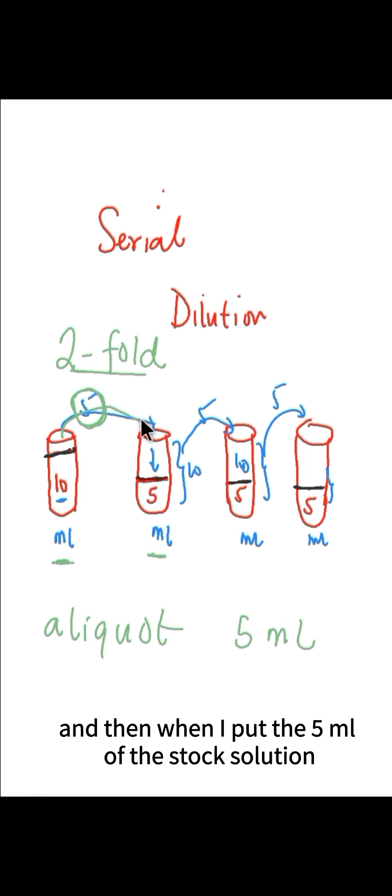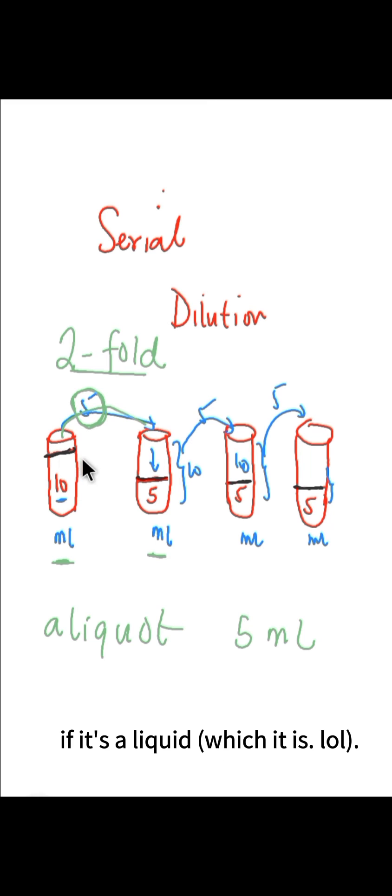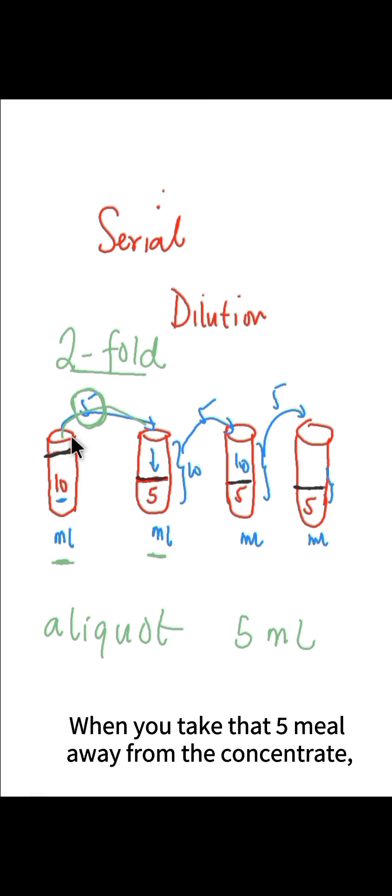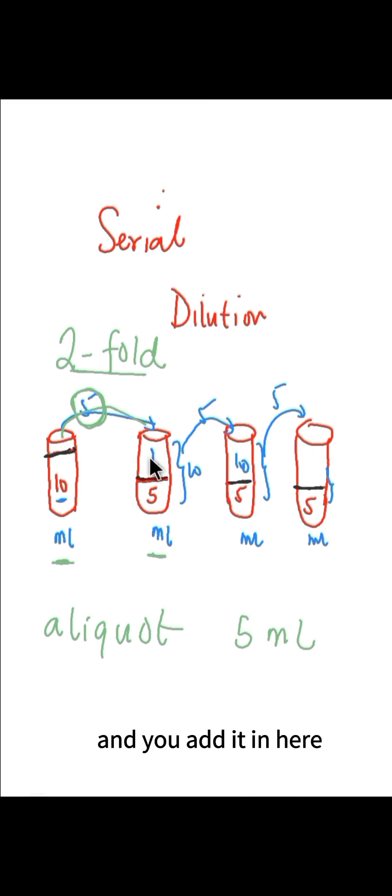put the 5ml of the stock solution—or you can call it the concentrate if it's a liquid—when you take that 5ml away from the concentrate and add it in here, the total volume will become 10ml, right? Good. So the total volume is 10ml, the aliquot is 5ml.